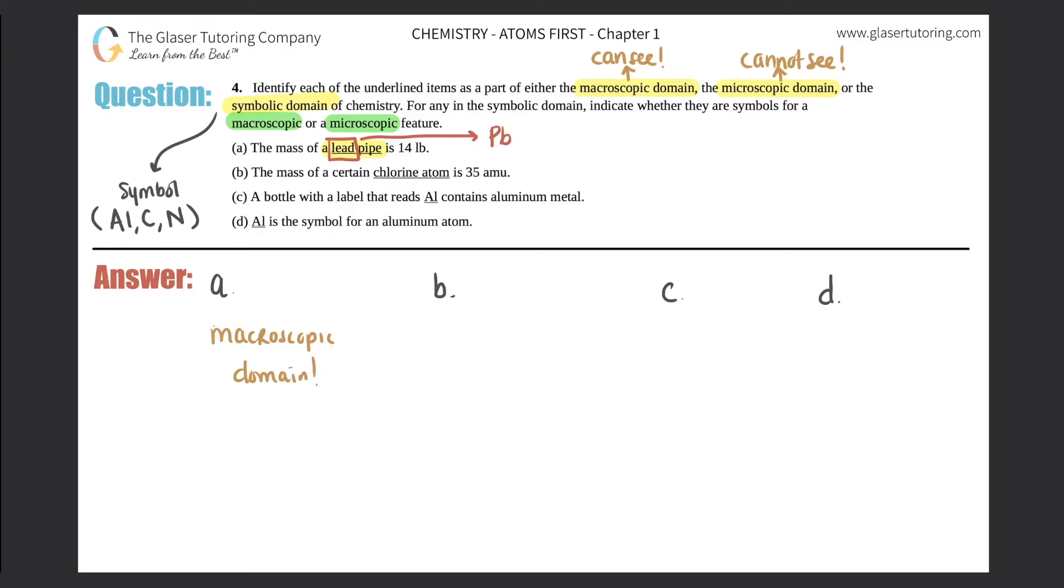Next, the mass of a certain chlorine atom is 35 amu. Once again, they wrote the word chlorine. They did not give the symbol for what chlorine was, which is Cl. So scratch the symbolic domain. It's either macroscopic or microscopic. Now it's a chlorine atom. Can we see with our own eyes an individual chlorine atom? Definitely not, right? Our eyes are not powerful enough to see that small chlorine atom, so this would be microscopic domain.